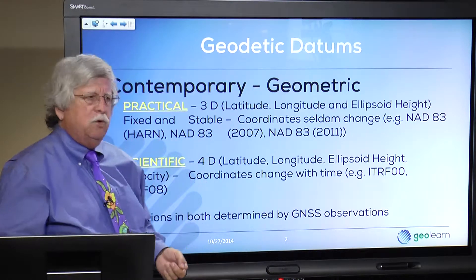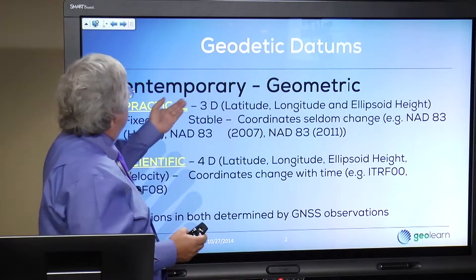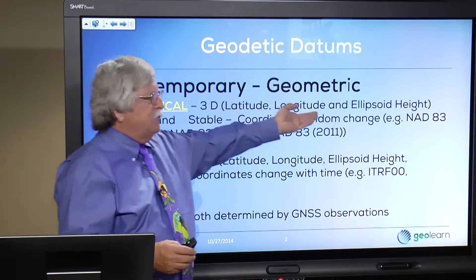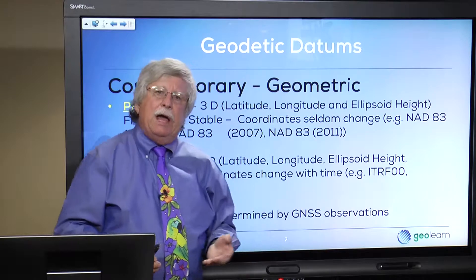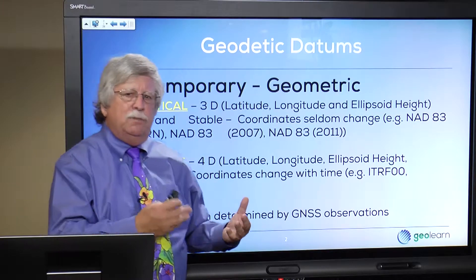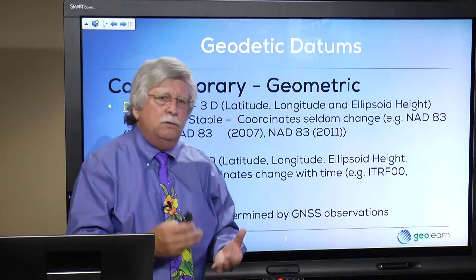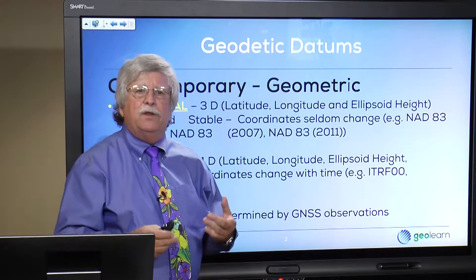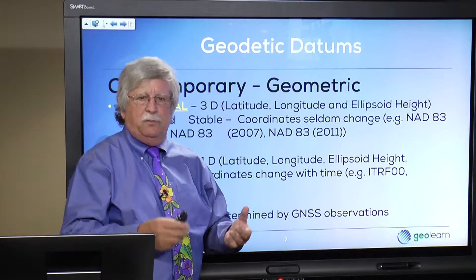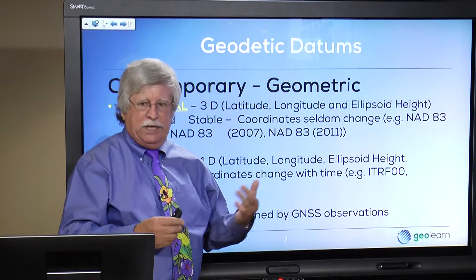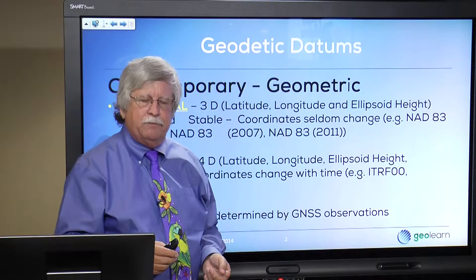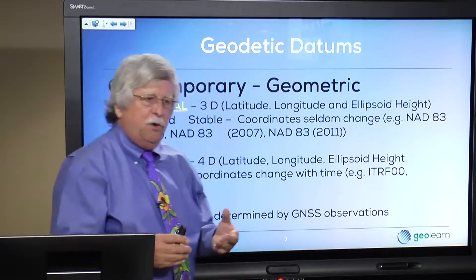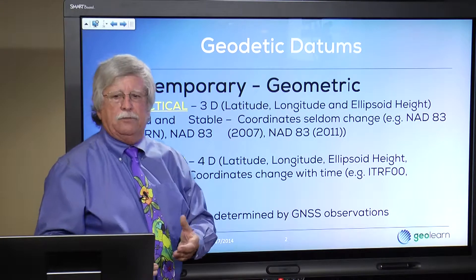State plane coordinates, UTM coordinates — but a geometric datum is three-dimensional: latitude, longitude, and ellipsoid height. The development of geometric datums has only really been made possible with the development of a space-based positioning system such as the Global Positioning System. In general, there are two approaches to this.